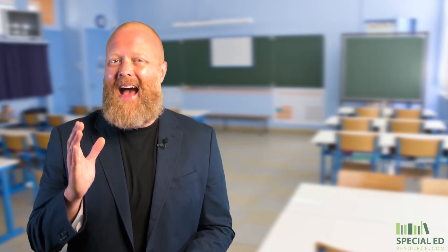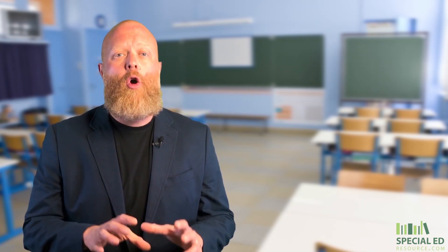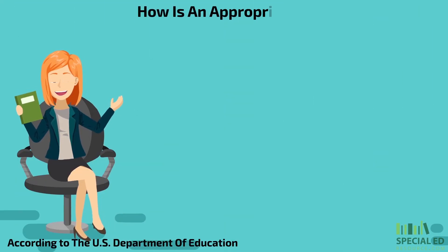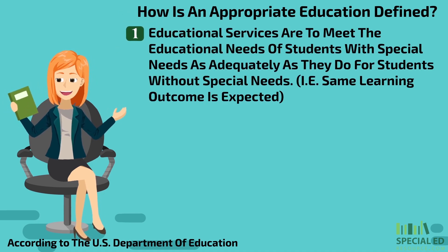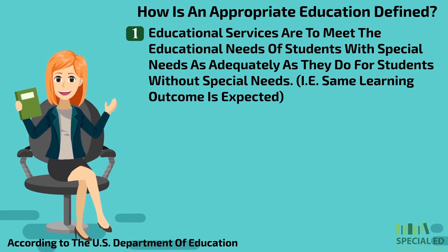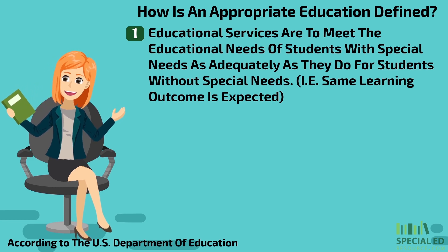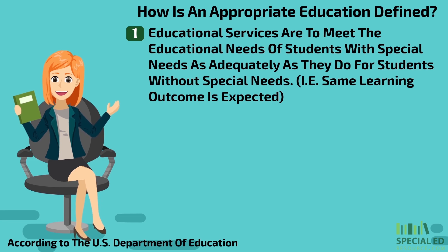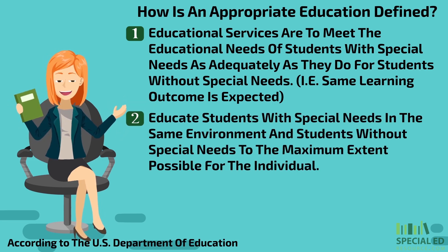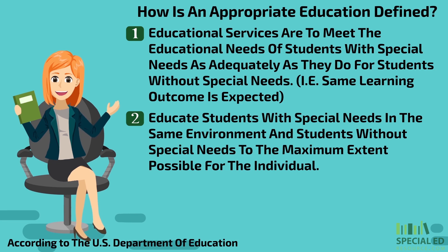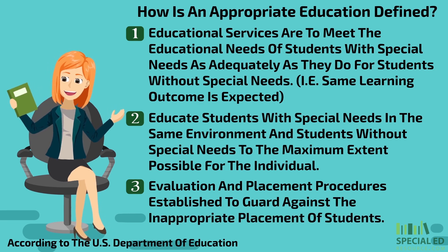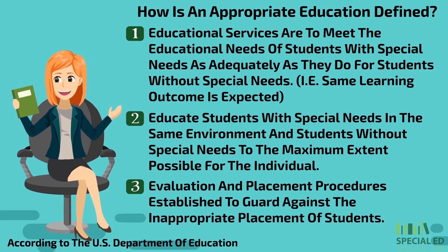Next, let's discuss how an appropriate education is defined according to the U.S. Department of Education. Number one, educational services are to meet the educational needs of students with special needs as adequately as they do for students without special needs — i.e., the same learning outcome as expected. Number two, educate students with special needs in the same environment as students without special needs to the maximum extent possible for the individual.